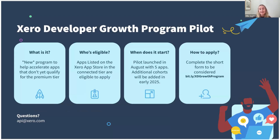Another initiative led by Platform Marketing is the Xero Developer Growth Program. It's a new initiative designed to help accelerate apps towards the premium tier by offering enhanced visibility and tailored support. Any app on the Xero App Store in the connected tier is eligible to apply. Right now we're in the pilot phase, which kicked off in August and will run for six months — we have five apps in the initial pilot. It's very much test and learn, aiming to expand in early 2025. While the next cohort isn't open yet, there is a short form you can fill out to express interest. We'll keep you informed via the Developer Newsletter or the Xero Developer blog.